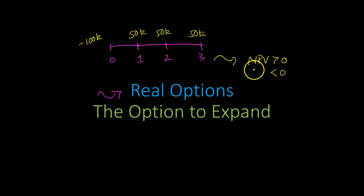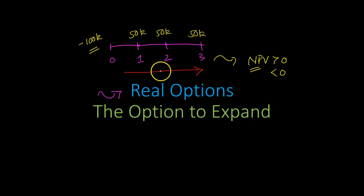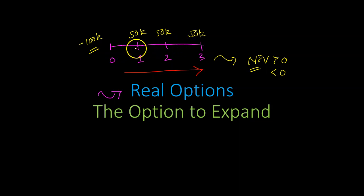While NPV is a very useful metric to evaluate investments, it turns out that even NPV has a flaw. The NPV methodology assumes that once you undertake this investment of $100,000 at time period zero, you're going to sit back, relax, and let the next three years flow. In other words, the NPV methodology assumes that once the project has been started, there are no additional adjustments, no additional options that you can avail during the life of the investment — which may or may not be true.